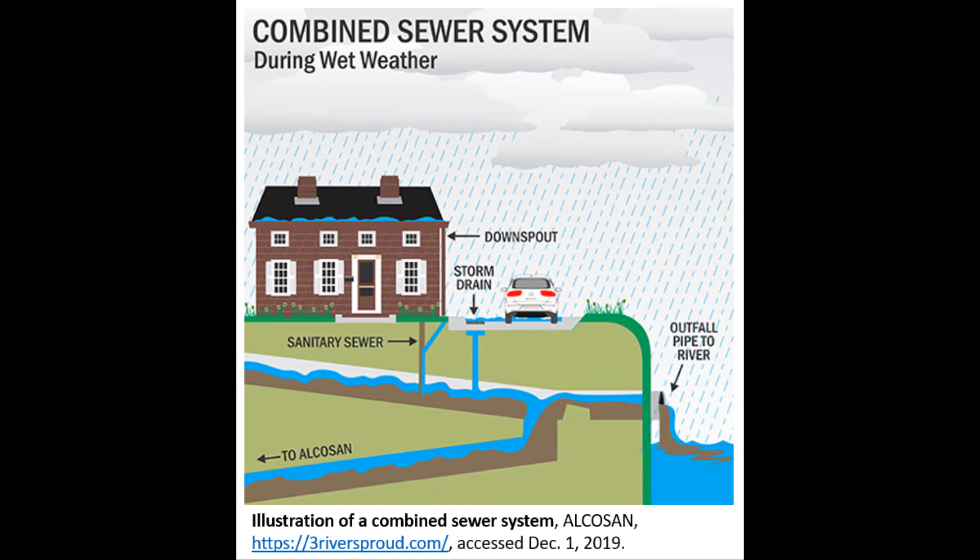Pittsburgh has a combined sewer system. This means that sewage and storm runoff are collected in the same pipes. When the weather is dry, combined sewer systems can operate just fine, but during wet weather, the flow of combined wastewater and runoff overwhelms the treatment facilities and overflows at discharge sites into the river.